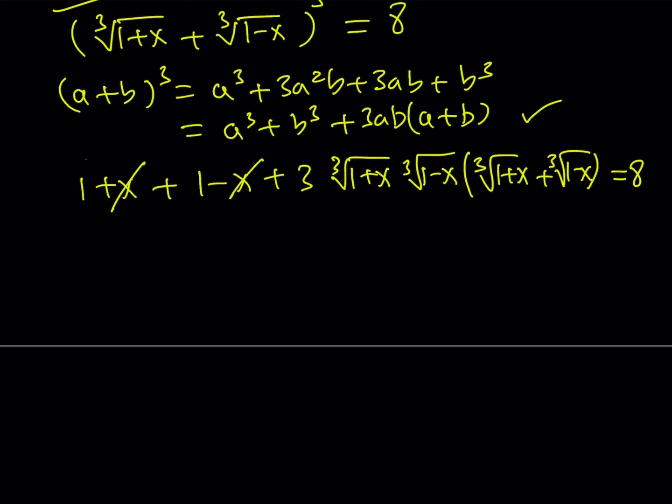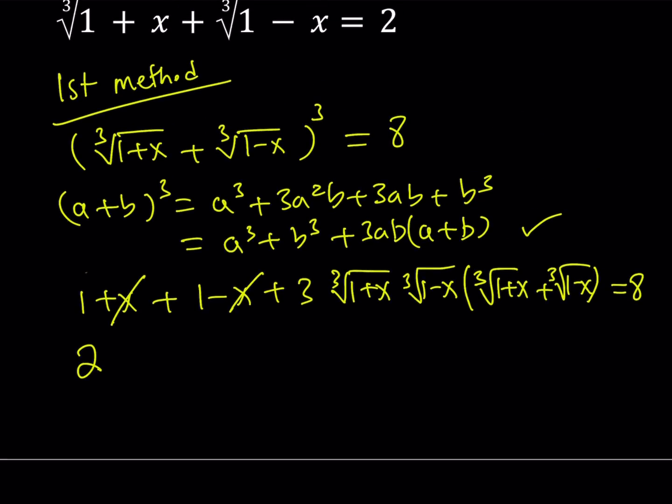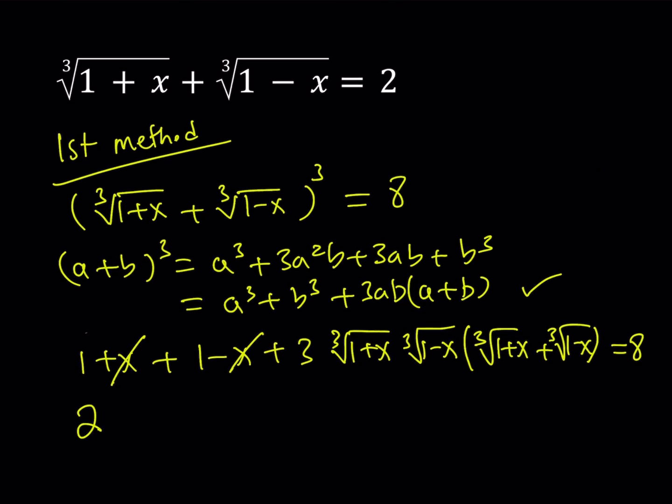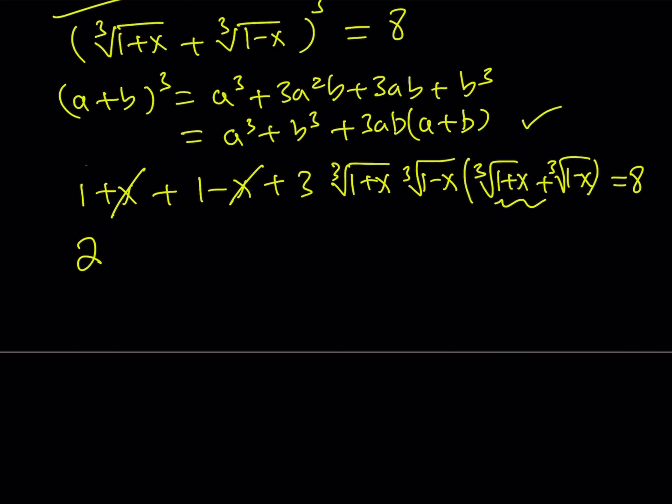x cancels out. 1 plus 1 is equal to 2. Now, notice that we have cube root of 1 plus x plus cube root of 1 minus x equals 2. So, this is equal to 2. And when you multiply by 3, that's going to be a 6. When you multiply these two things, you're going to get the cube root of 1 minus x². And that is equal to 8.